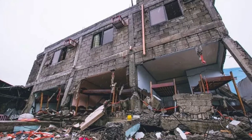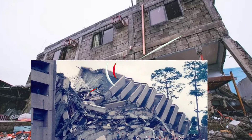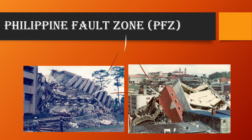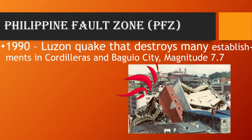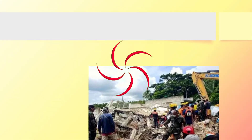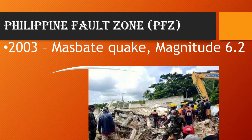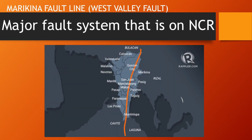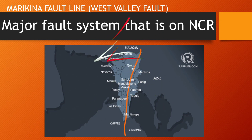Some notable faults in the Philippines: the Philippine fault zone, a 1,200 kilometer long fault that stretches from Luzon to Mindanao — the largest fault system in the Philippines. This picture shows some of the devastating earthquakes in the Philippines: the Ragay Gulf quake which has a 7.0 magnitude, the Cordillera and Baguio quake which has a 7.7 magnitude, the Masbate quake which has 6.2 magnitude. The major fault system in NCR will be discussed on the next activity.